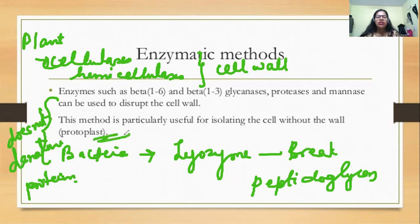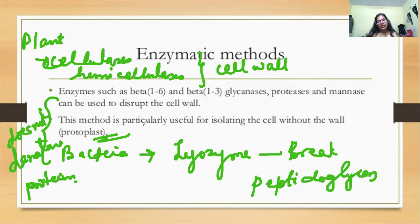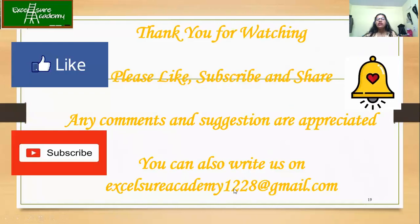That covers cell lysis. Whether you have fungus, plant, animal, or bacteria as your source, depending on the properties of the cell membrane or cell wall, you choose your lysis method. After cell lysis, the next topics are crude cell extraction, fractionation, dialysis, and chromatographic techniques. Chromatographic techniques are very important in protein purification and will be covered in detail with advantages and disadvantages. Hope you liked this video — if any doubts, comment or write to us at accesshareacademy1228@gmail.com. Thank you for watching.